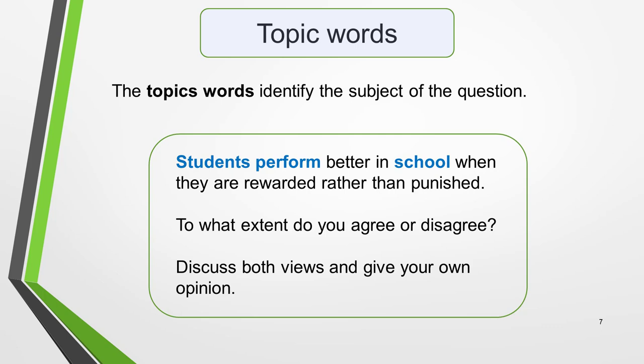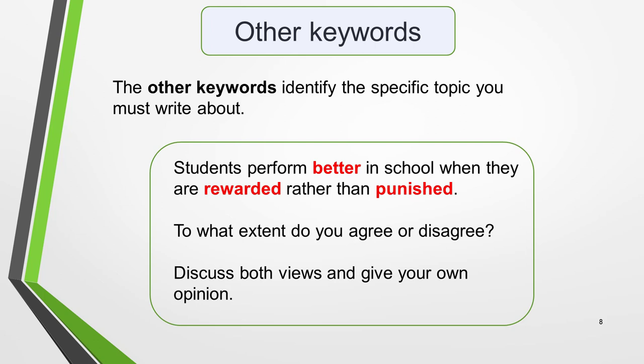What we need to do, now that we know the general topic, is to understand exactly what aspect of student performance we are being asked to write about. The other keywords in the question tell you the specific topic you must write about — they define the opinion or opinions stated in the statement. In this question they are 'better,' 'rewarded,' and 'punished.' By highlighting these words it's easy to see that you are being asked your view on whether reward or punishment leads to better student performance. Your essay must only include ideas relevant to these keywords.